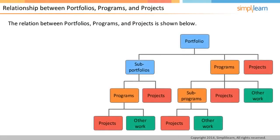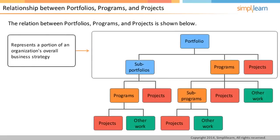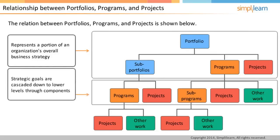A portfolio is part of an organization's overall strategy. It represents a conscious decision by an organization to invest in the portfolio. The overall objectives of a portfolio are then cascaded down to the lower-level components. The components could be sub-portfolios, programs, or projects. These components can further be broken down into smaller components for ease of management.